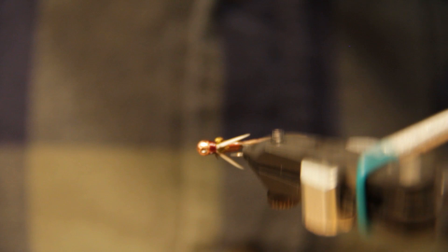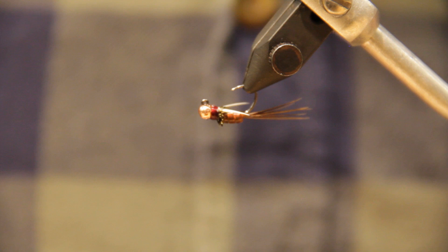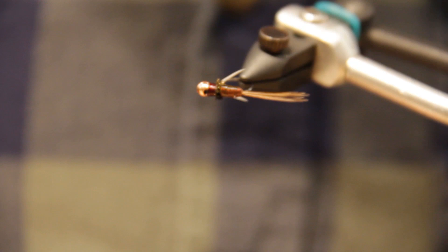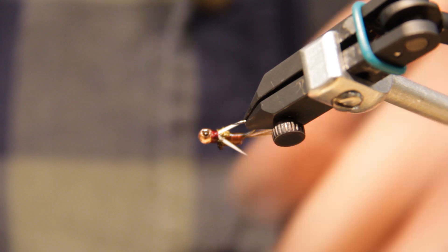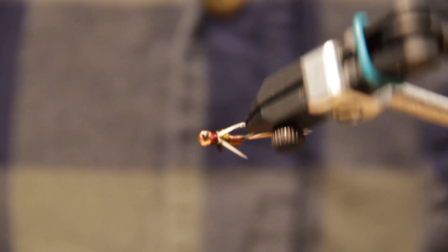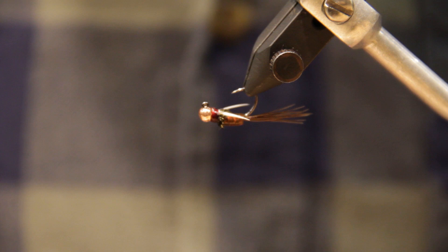So this little crimson prince is a great fall pattern when there's a lot of mahogany duns around. You'll see them crawling out of the water. Size 14 is generally a good starting point with this pattern. You can use a bunch of different jig hooks, but I found the lighter wire true-to-goods hooks work really well. The wide gap helps you set on fish a little bit easier. I found my hookup rates are a little bit better on wide gap jig hooks.